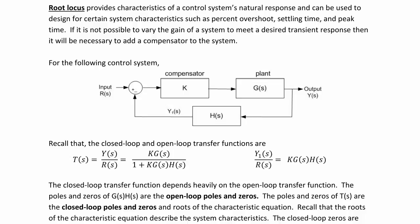The closed-loop transfer function depends heavily on the open-loop transfer function. The poles and zeros of G(s) and H(s) are the open-loop poles and zeros. The poles and zeros of T(s) are the closed-loop poles and zeros and roots of the characteristic equation.